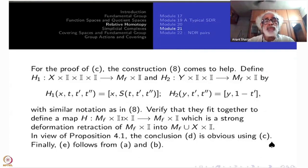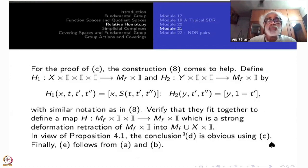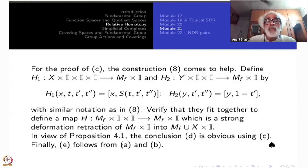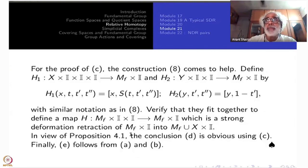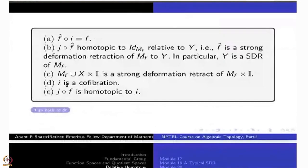This gives a map from MF cross I cross I to MF cross I which is a strong deformation retraction of MF cross I into MF union X cross I. So MF union X cross I is a strong deformation retract of MF cross I. Once you have this, the proposition tells you that the inclusion of X into MF is a co-fibration — that is D.